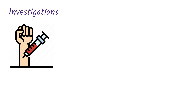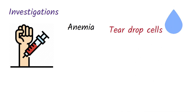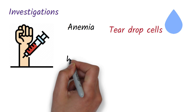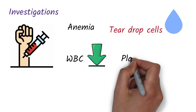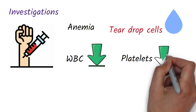In the investigations of myelofibrosis, there will be anemia — a low red blood cell count — and you will also see teardrop cells in the blood picture. Initially, because of the extramedullary hematopoiesis, there will be an increased count of white blood cells and platelets. But later, the extramedullary hematopoiesis will not be able to keep up with the bone marrow failure, leading to leukopenia and thrombocytopenia.